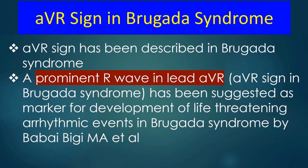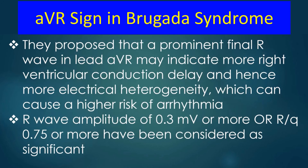The AVR sign has been described in Brugada syndrome. A prominent R wave in lead AVR has been suggested as a marker for the development of life-threatening arrhythmic events in Brugada syndrome. A prominent final R wave in lead AVR may indicate more right ventricular conduction delay and hence more electrical heterogeneity, which can cause a higher risk of arrhythmia. An R wave amplitude of 0.3 mV or more, or an R/Q ratio of 0.75 or more, have been considered significant.